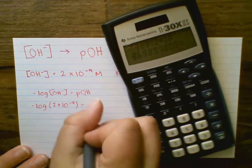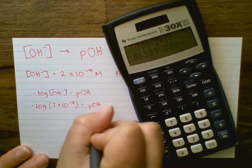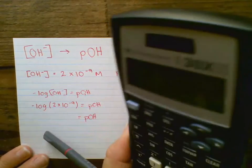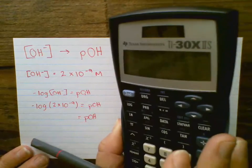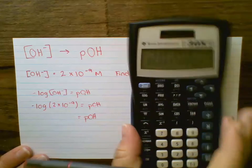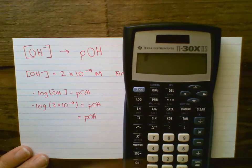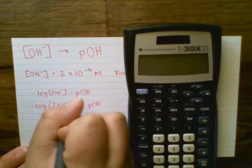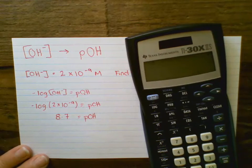So in this case I'm getting a pOH equals... it looks like it's 8.698. So 8.6, 8.7. That's going to be my pOH value.